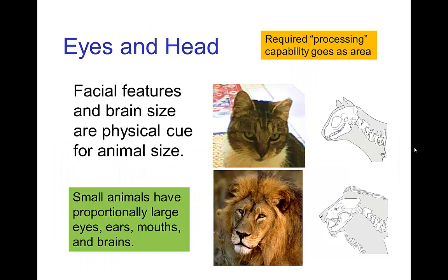The characteristics of the face — such as the size of the eyes, the ears, the mouth, and also the size of the brain relative to the rest of the head — tend to be larger, relatively speaking, for small animals. So small animals have proportionally large eyes, ears, mouths, and brains. Part of this is because the required processing capability goes as the area. Basically, a lion doesn't need eyes that are that much bigger than an ordinary cat's.